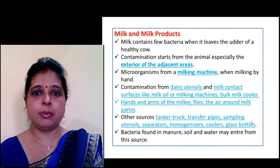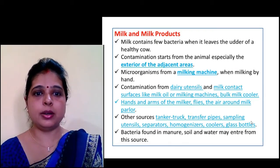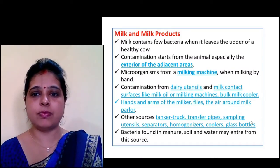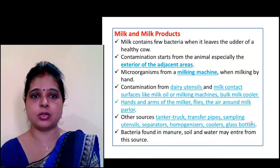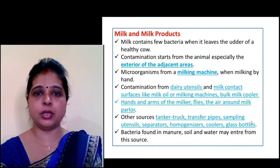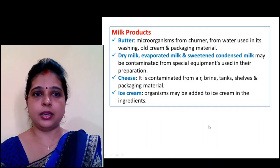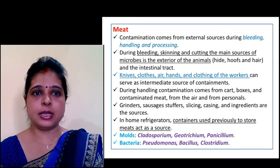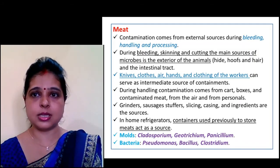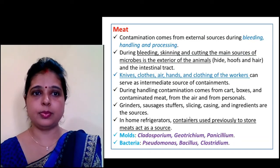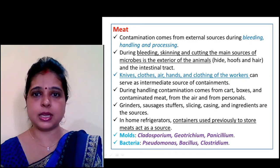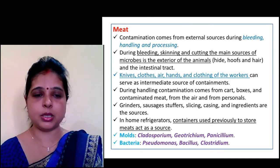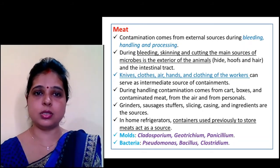Sources of milk contamination include milking machines, dairy utensils, bulk milk coolers, hands and arms of the milker, flies, air around the milk parlor, tank trucks, transfer pipes, sampling utensils, separators, homogenizers, coolers, and glass bottles. For meat spoilage, contamination comes from external sources during bleeding, handling, and processing. Skinning and cutting are main sources of microbes. Among molds, Cladosporium, Geotrichum, Penicillium play important roles, and among bacteria, Pseudomonas, Bacillus, and Clostridium cause spoilage of meat.